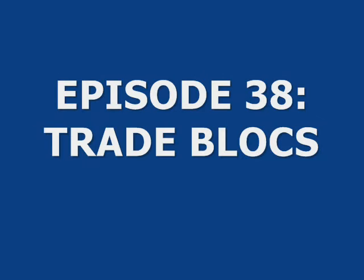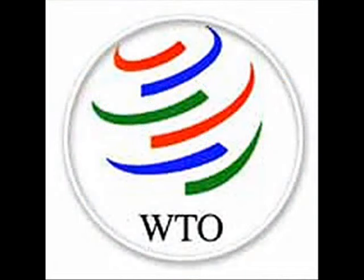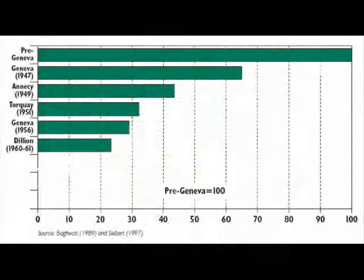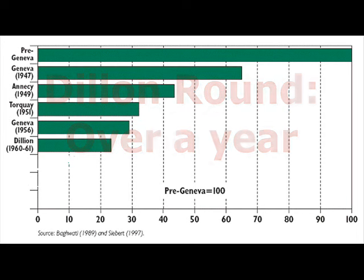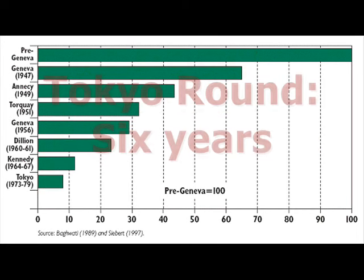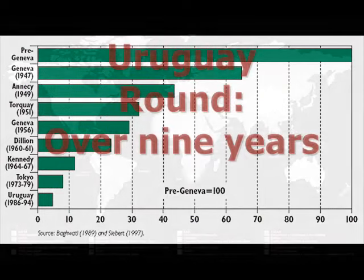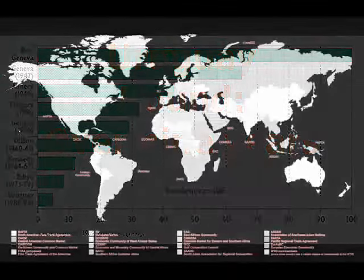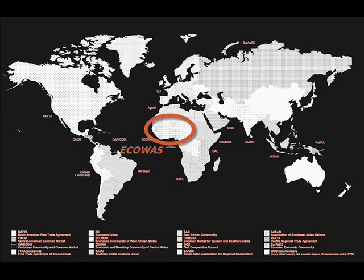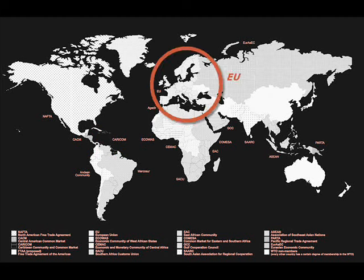You may recall from the previous episode on the World Trade Organization, formerly known as GATT, that the process of coming to agreement with over 150 countries involved is a long and arduous journey, with every round taking longer and longer to complete. Given that, some countries are finding it more expedient to work in smaller groups, usually with neighbors, to eliminate trade barriers.